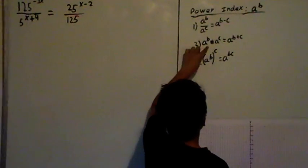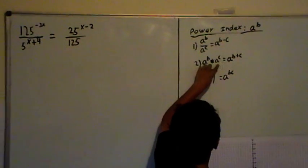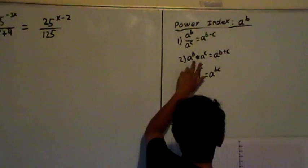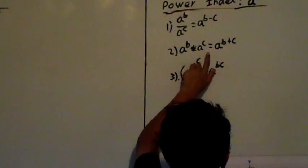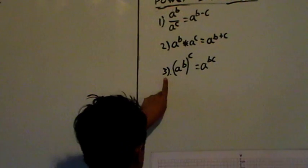Rule number two: A power B times A power C equals the addition of the powers, because they're the same base.